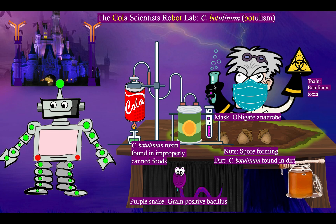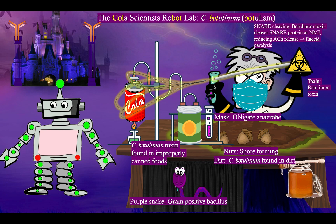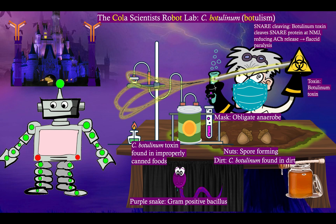That toxin is botulinum toxin, which our scientist has isolated. With that toxin, he is going to use his snare and cleave the cola off his contraption — cola for acetylcholine. Botulinum toxin cleaves a SNARE protein at the neuromuscular junction, thus inhibiting acetylcholine release and resulting in a flaccid paralysis. There goes our cola.